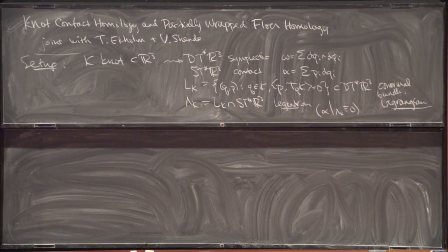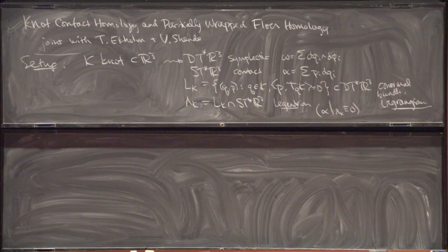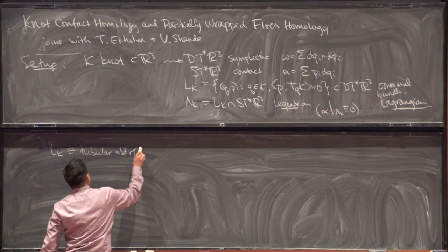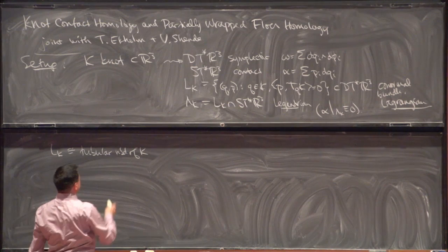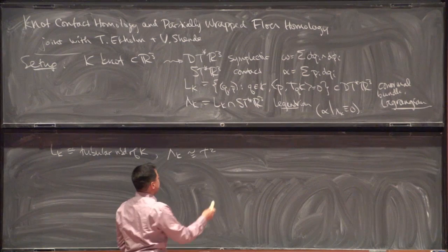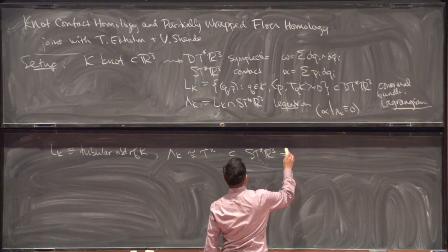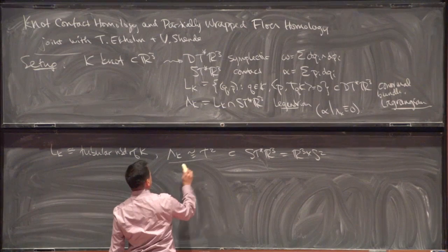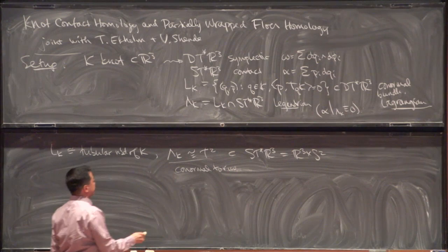Topologically, this co-normal bundle is diffeomorphic to the normal bundle of K inside of R³, so the normal bundle looks like a tubular neighborhood. So topologically it's a tubular neighborhood of K inside of R³ — it's topologically a solid torus — and then its boundary is topologically a two-torus. This sits inside of the unit cotangent bundle of R³, which, if you ignore the contact structure, looks like just R³ cross S². I'll call this the conormal torus, a Legendrian two-torus sitting inside of a contact five-manifold.